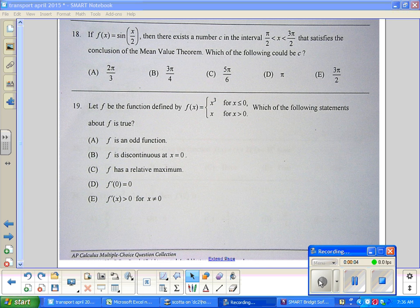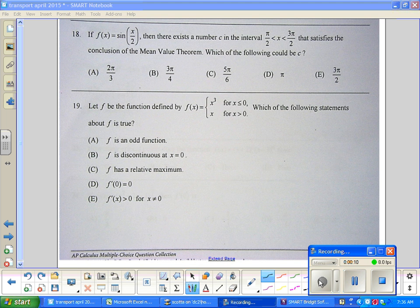1993 multiple choice. We'll start with 18, 19. Let's see if we can get through 20, 21, and then 22. Number 18: If f(x) equals sin(x/2), then there exists a number c in the interval π/2 to 3π/2 that satisfies the conclusion of the mean value theorem. Which could it be?